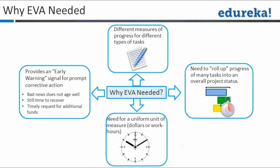We need to address issues and take care of them immediately as a project manager. If we know that the project is not going as per schedule and will get delayed, we need to find out what is causing the delay and what can be done to recover while there is still time — whether that means additional funding, additional resources, or something else. EVA helps you roll up the progress of many tasks into overall project status with a uniform unit of measure.